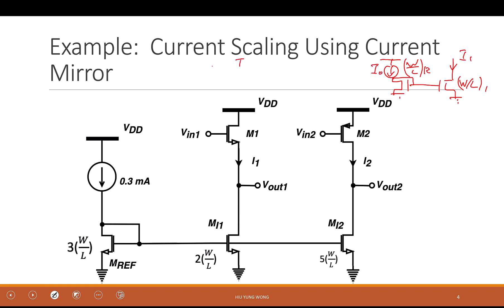So what is the relationship between I one divided by I zero? W on L one divided by W on L ref, do you agree? Is it intuitive? I hope you will feel this intuitive, right? You won't swap it, for example, you won't say W on L out divided by W on L one, because you understand that if I have a wider transistor